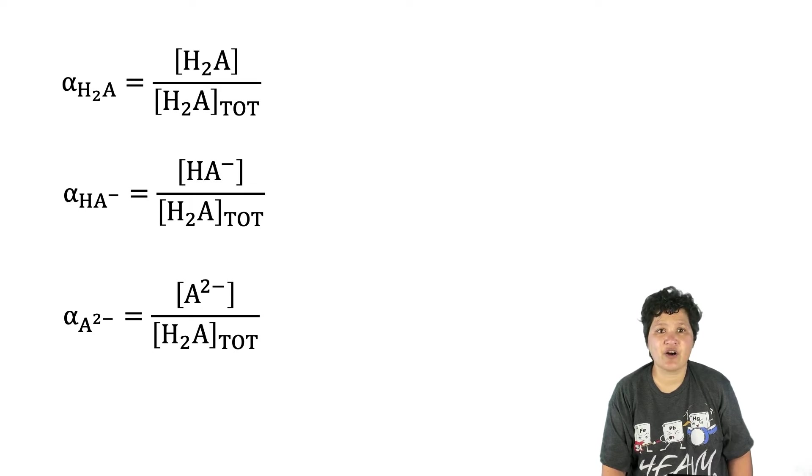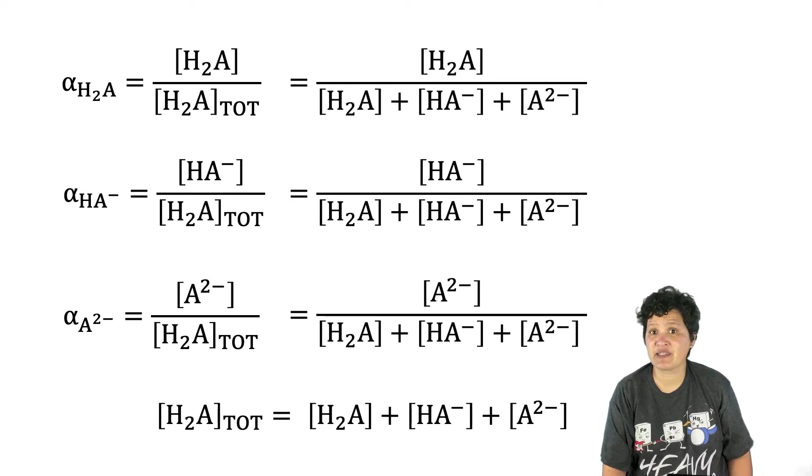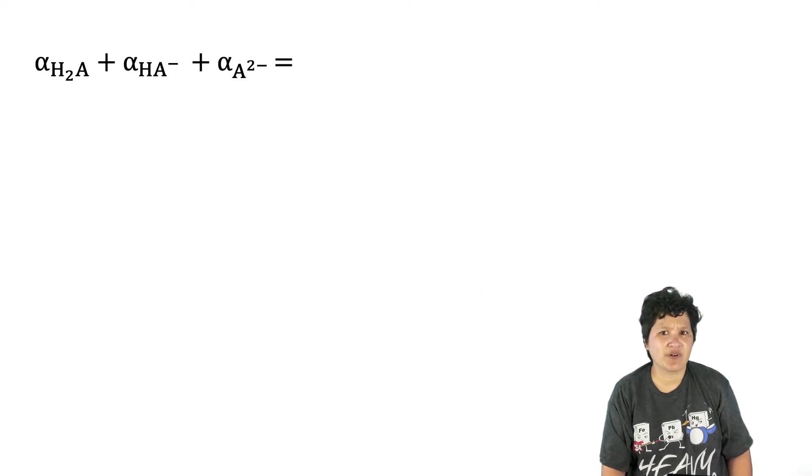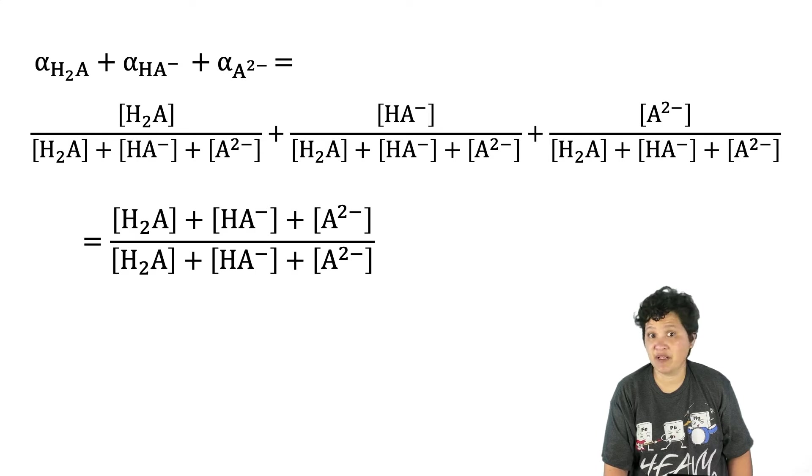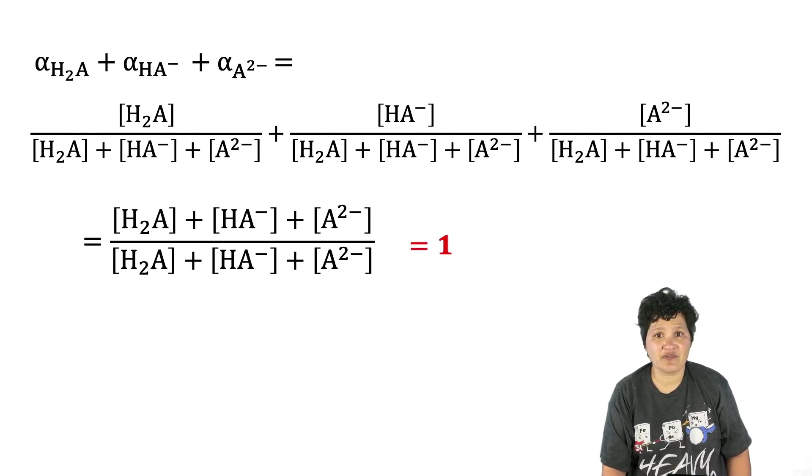Don't forget that we also have an expression for the total amount of acid, and we can substitute this into the expressions we just wrote. As with monoprotic acids, if we add the fractional composition of each of our three solution components, we get three fractions that can be combined into a single fraction, and the simplified total of these fractions equals one. Again, that will always be true of your fractional compositions. But what we really want to do with diprotic acids is create the same sort of pH-dependent fractional composition expressions that we did for monoprotic acids.